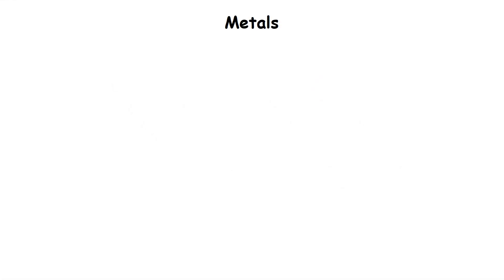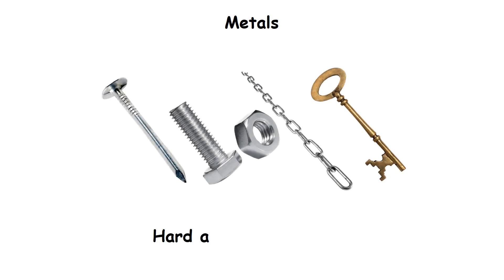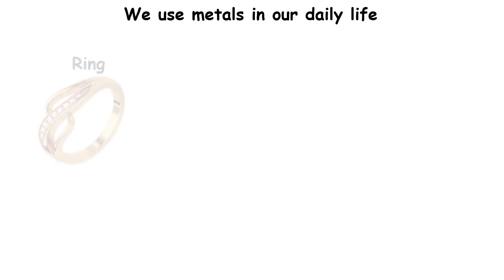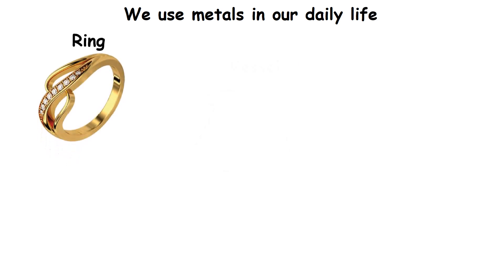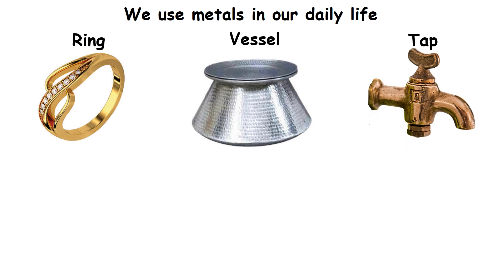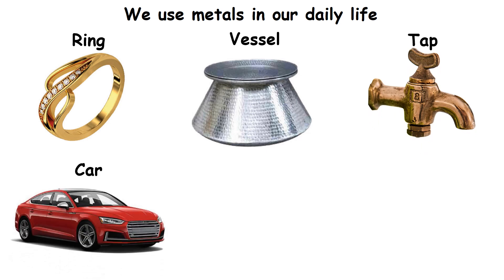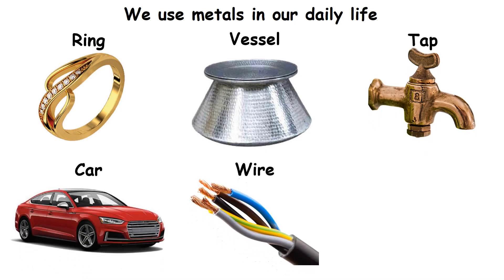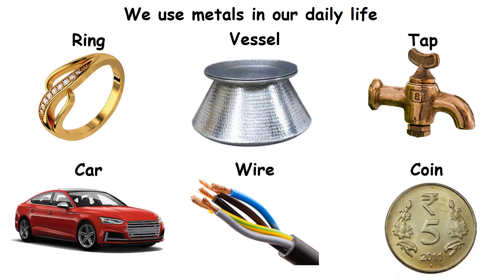Metals. Metal is a hard and shiny material. We use metals in our daily life in many ways. For example, ring, whistle, tap, car, wire and coin.